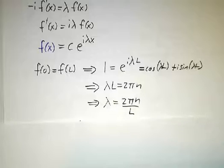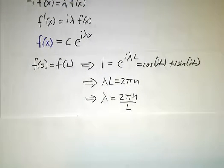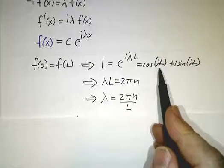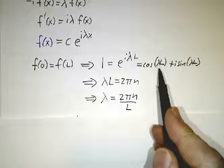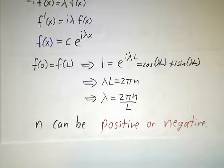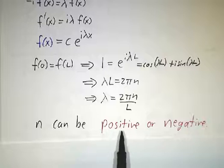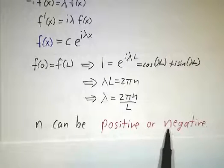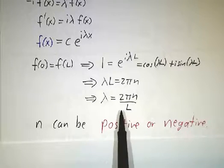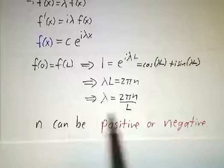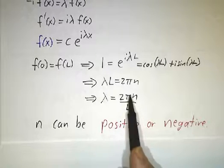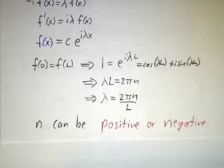But the key thing to note here is in this equation, nothing says that lambda has to be positive or negative. n can be any integer, not just positive integers, any integer. So we have this whole string of eigenvalues running from minus infinity to plus infinity, going by steps of 2π over L.